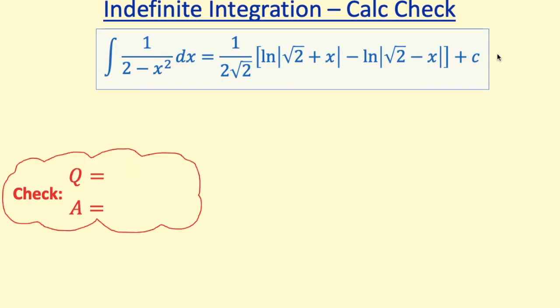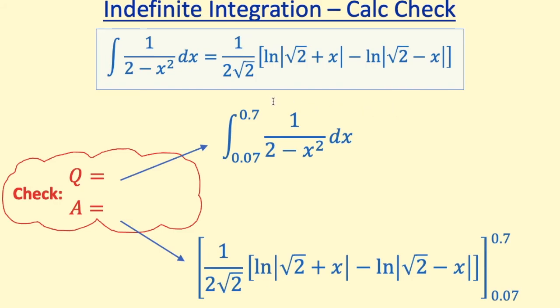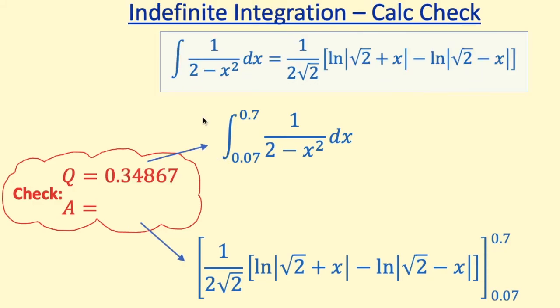One for you now. Suppose you've integrated this 1 over 2 minus x squared and got this huge answer. You want to know if you're correct during an exam. Pause the video and have a go. So hopefully you remembered that to find the question, you're going to use the definite integral function on your calculator. You should find you get an answer of 0.34867.